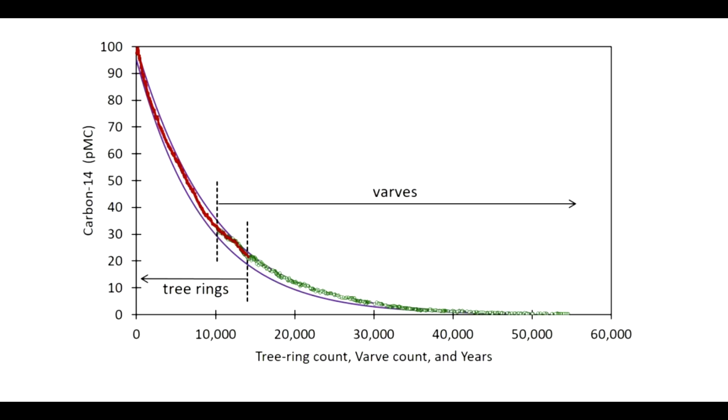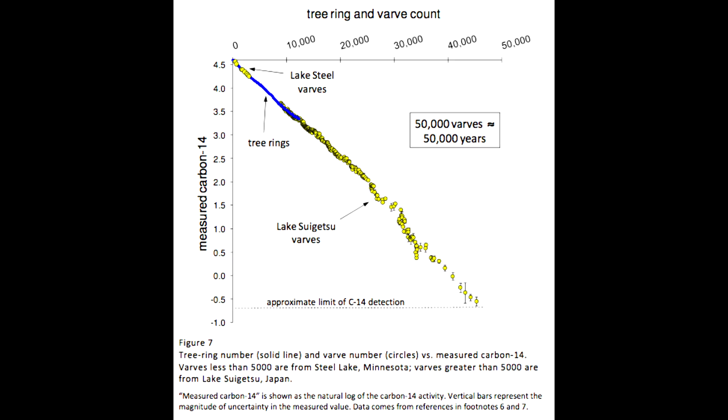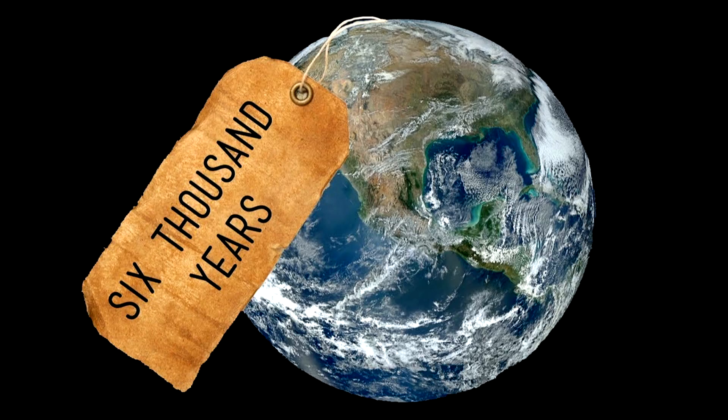Young Earth creationists say that trees can put on more than one ring per year. And they say it's possible for multiple varve layers to be laid every year also. And also that carbon-14 dating is unreliable. But they have yet to explain how each varve in Lake Suigetsu matches each ring in the tree ring count, while the carbon-14 content of each lines up near perfectly. There are, in fact, over 100,000 varves in Lake Suigetsu. And at the end of this second episode, we now have a minimum age of the Earth of 100,000 years, 17 times greater than what young Earth creationists would have us believe.